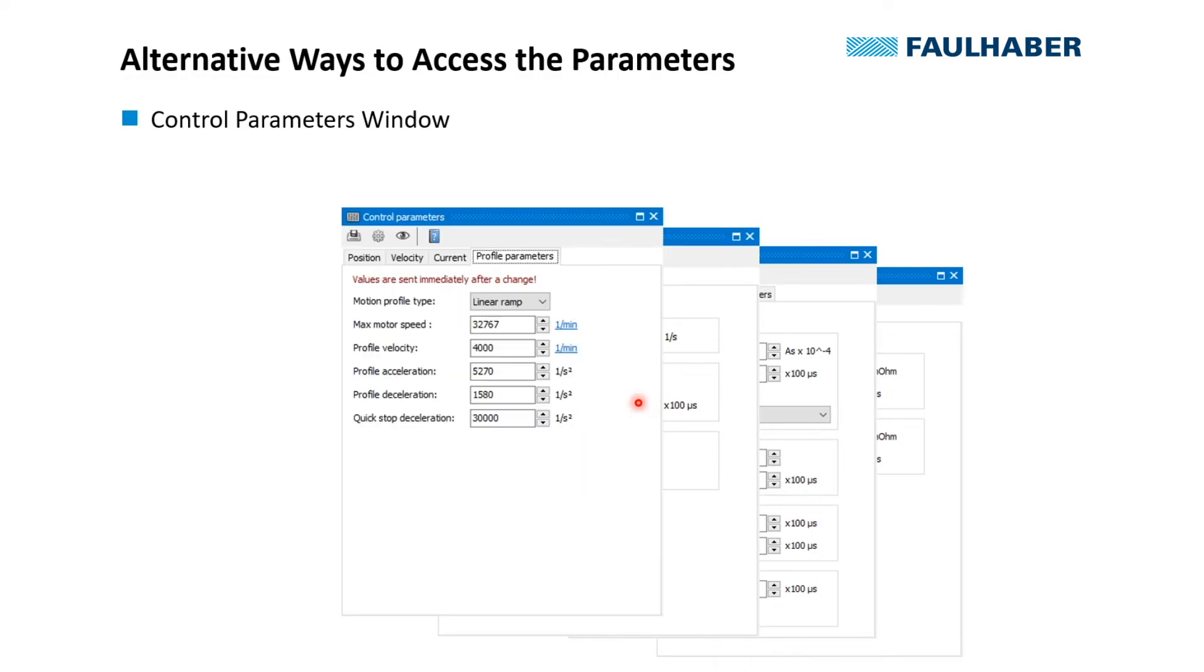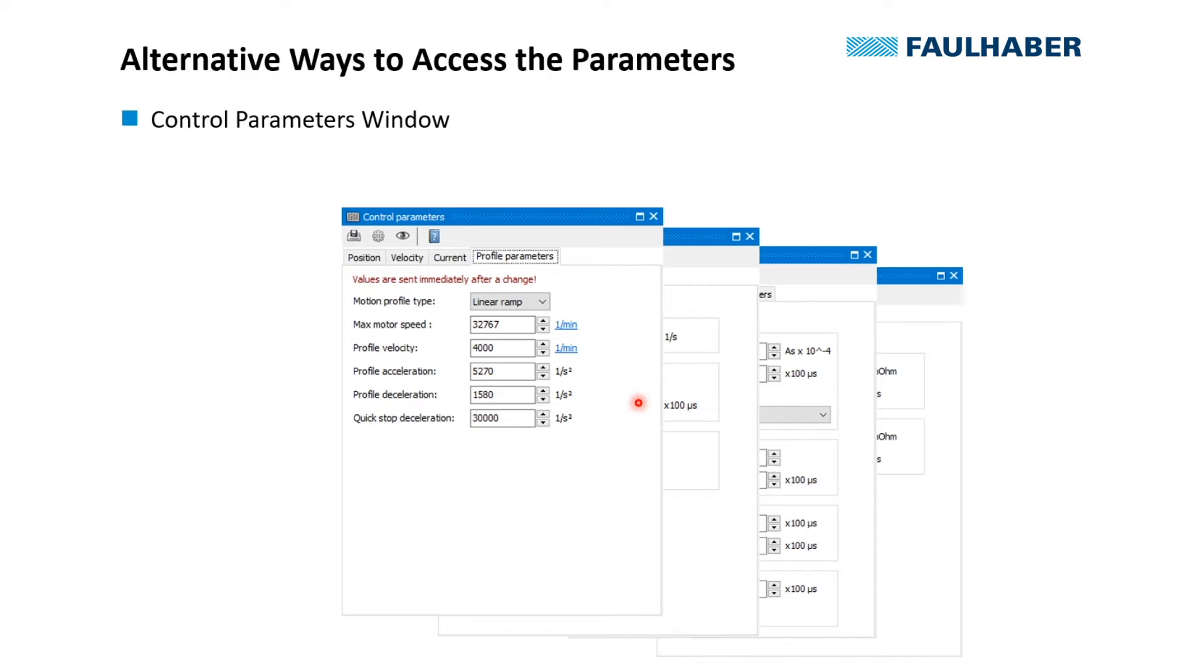And the last one, the profile parameters window, where we can configure the maximum speed that is allowed for these moves, and acceleration and deceleration, and these are really important. And the option for different motion profile types, like a sine square one which would be alternatively available.